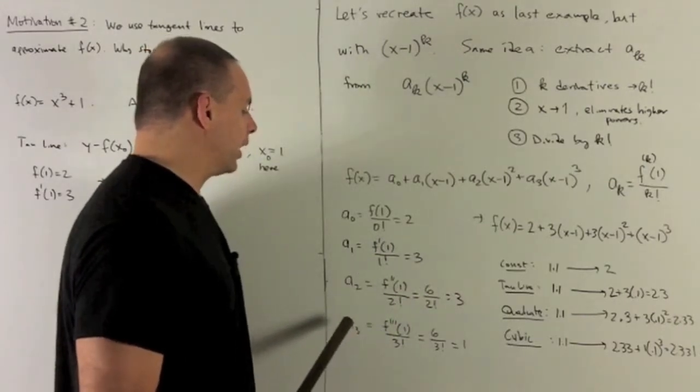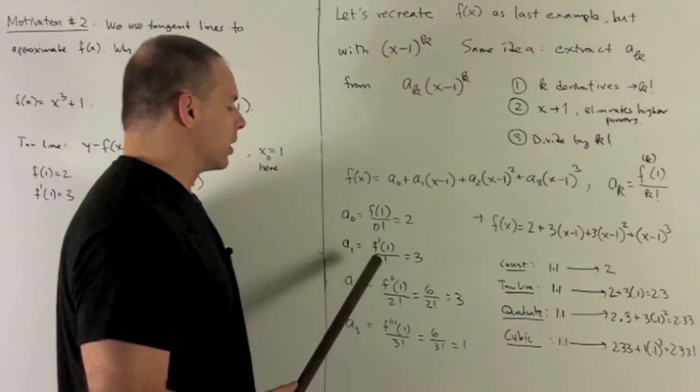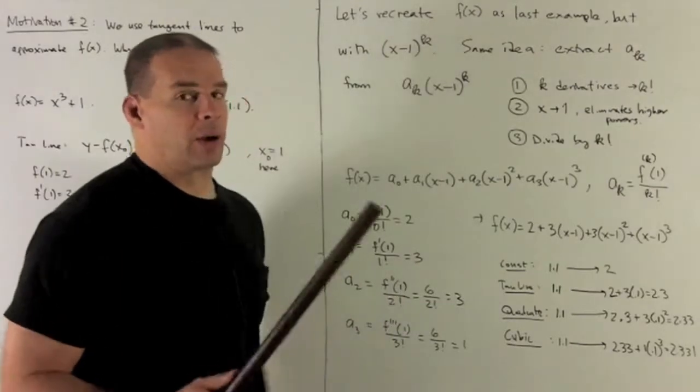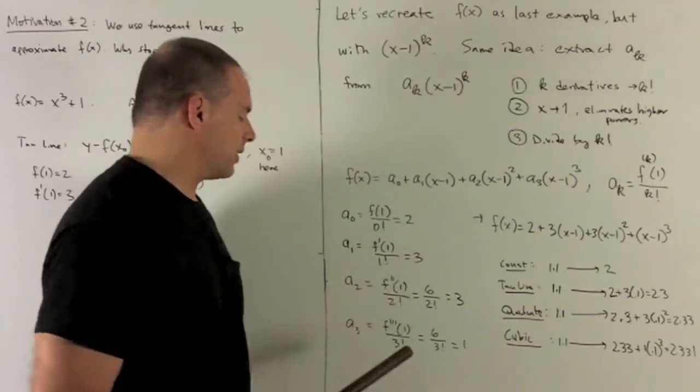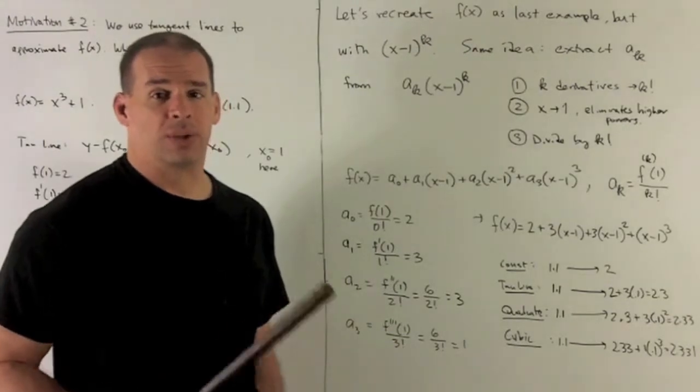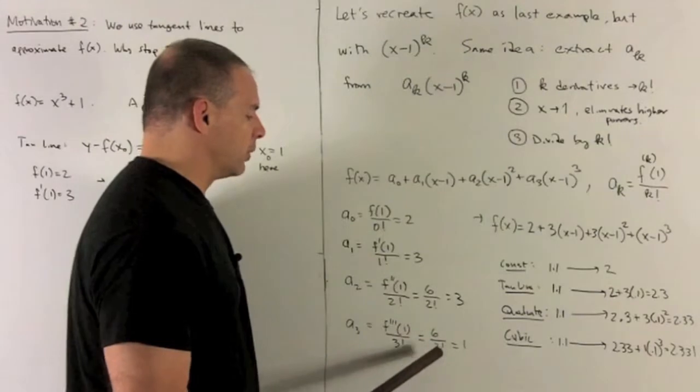I get to a sub 3, we're going to take the third derivative, evaluate at 1. So we're going to take the derivative of 6x, it's going to give me a 6. Evaluating at 1, we're just going to get 6. And I divide by 3 factorial, which is 3 times 2 times 1, which is 6. 6 divided by 6 gives me 1.